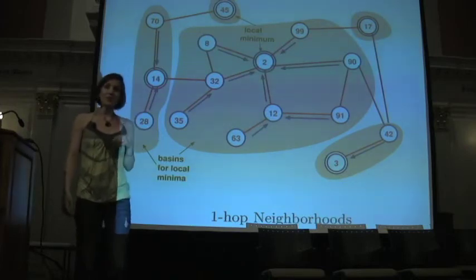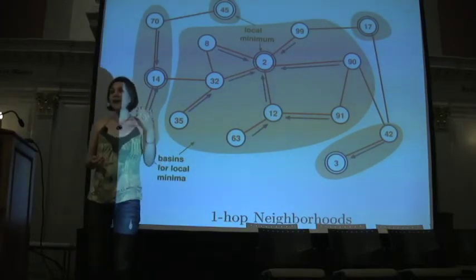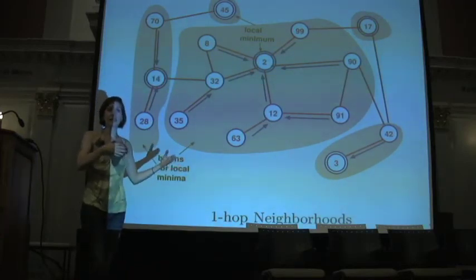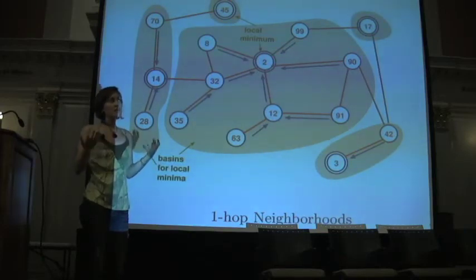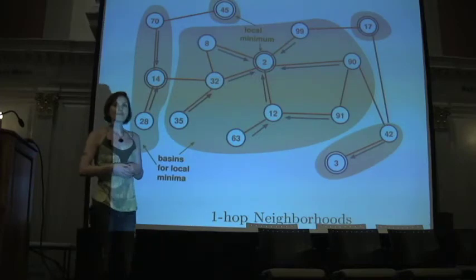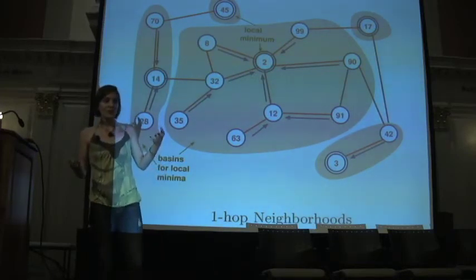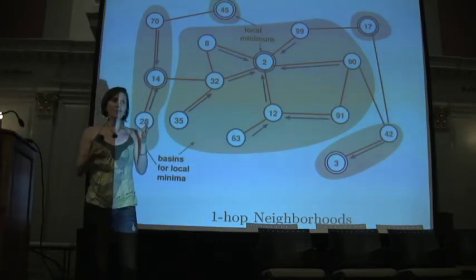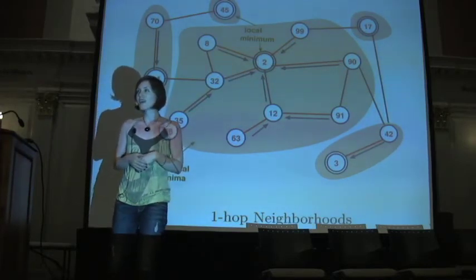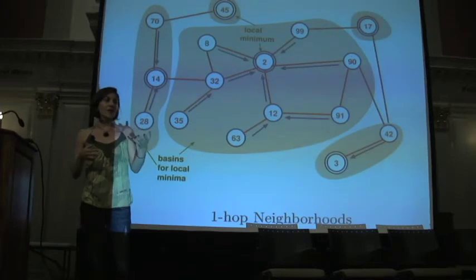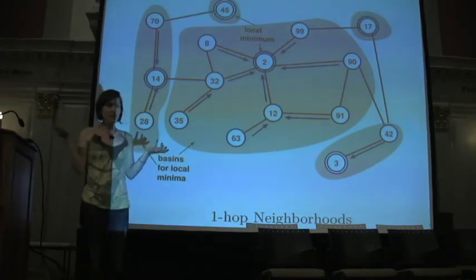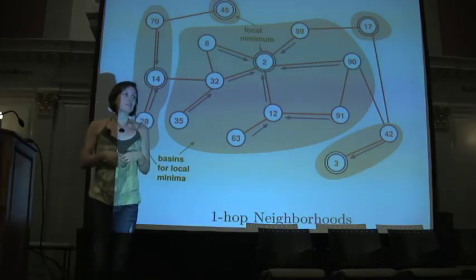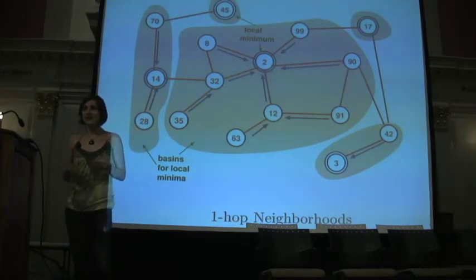Any piece of data you want to store in that network you give a tag, and you hash it into that space. Say I had a piece of data about a restaurant — that's my tag — and I hash the word 'restaurant' and the hash I get is the number seven. If I'm the source of that information, I send that data out on what's called a random walk into the network of some certain length. At the end of that random walk, that piece of information looks around at all its neighbors and says: who has an ID closest to seven? Whichever node in the local vicinity has that closest ID is where the information gets stored.